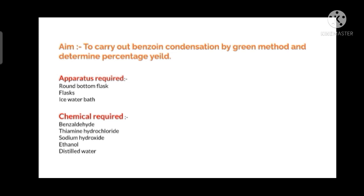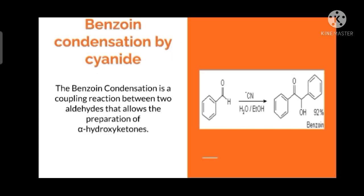Before knowing anything about the greener method, here is the definition: Benzoin condensation is a coupling reaction between two aldehydes that allows the preparation of alpha hydroxy ketone. We can see in the image that we are reacting one benzaldehyde with the cyanide ion to form the benzoin. This is basically the reaction which we were performing earlier by using cyanide.